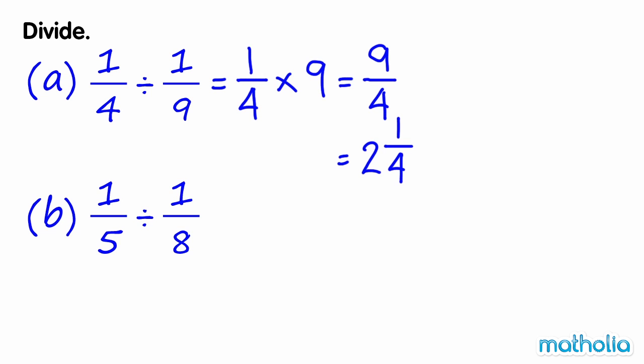B. One fifth divided by one eighth is equal to one fifth times eight. Eight fifths is an improper fraction that can be written as one and three fifths. So one fifth divided by one eighth equals one and three fifths.